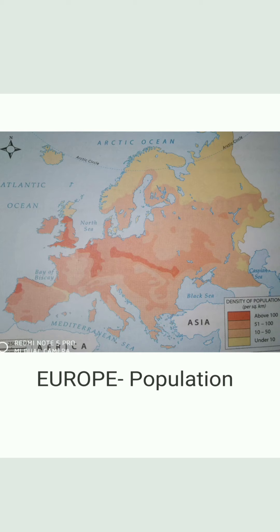Climate also plays a very important role in deciding the distribution of population. The climate is not the same everywhere. The coastal areas have a maritime type of climate, whereas the interior part of the land has a continental type of climate. There are extremes of climate at some places near the Arctic Ocean, and in these places the population is less.